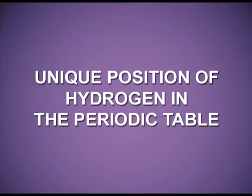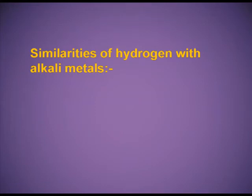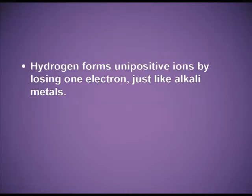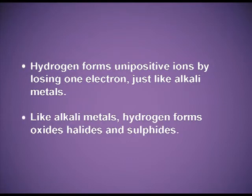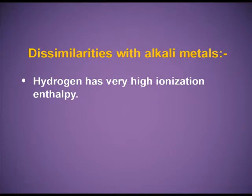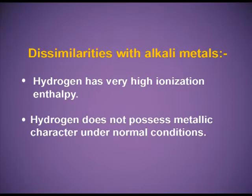Unique position of hydrogen in the periodic table. Similarities with alkali metals: the electronic configuration of hydrogen (1s1) is similar to that of alkali metals. Hydrogen forms unipositive ions by losing one electron, just like alkali metals. Like alkali metals, hydrogen forms oxides, halides, and sulfides. Dissimilarities with alkali metals: hydrogen has very high ionization enthalpy, and it does not possess metallic character under normal conditions.